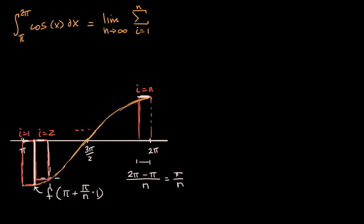What's this one going to be right over here? Well, this one is going to be f of π, our first start, plus π over n times what? We're going to add π over n two times. π over n times 2.